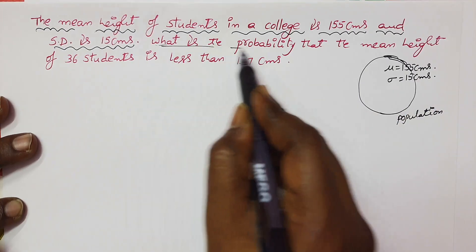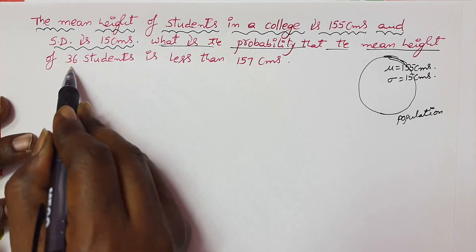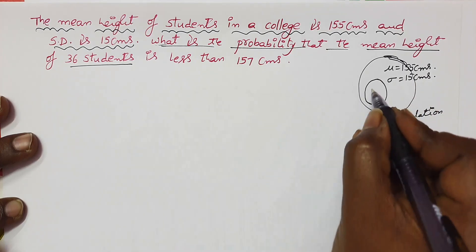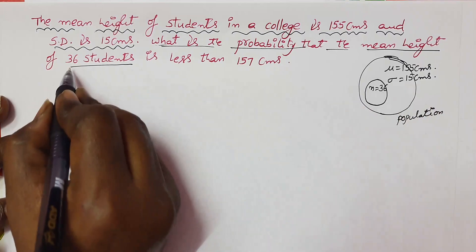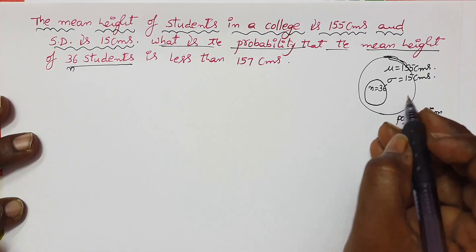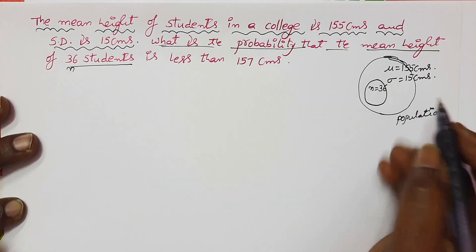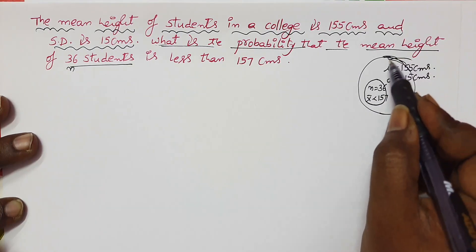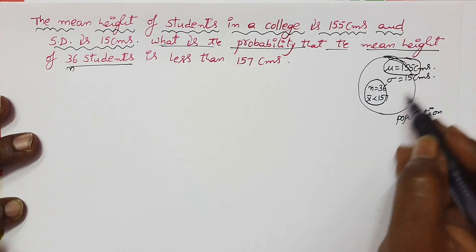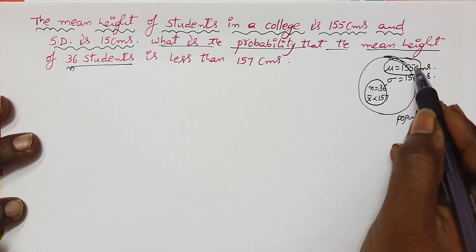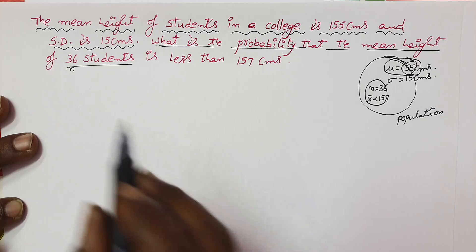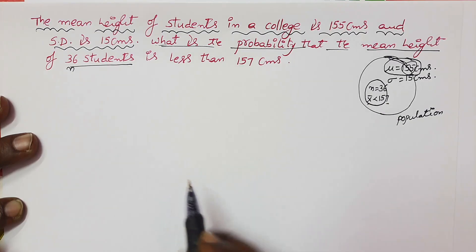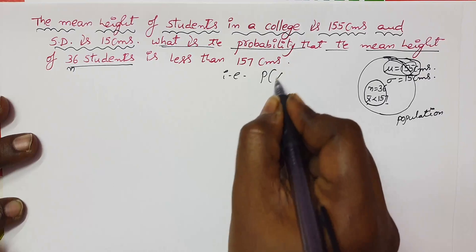What is the probability that the mean height of 36 students — here we take a sample from this college with 36 students, so n equals 36 — is less than 157 centimeters? So x̄ is less than 157. Since the population mean is 155, the sample mean is surely surrounding 155. We have to find the probability that x̄ is less than 157 centimeters.